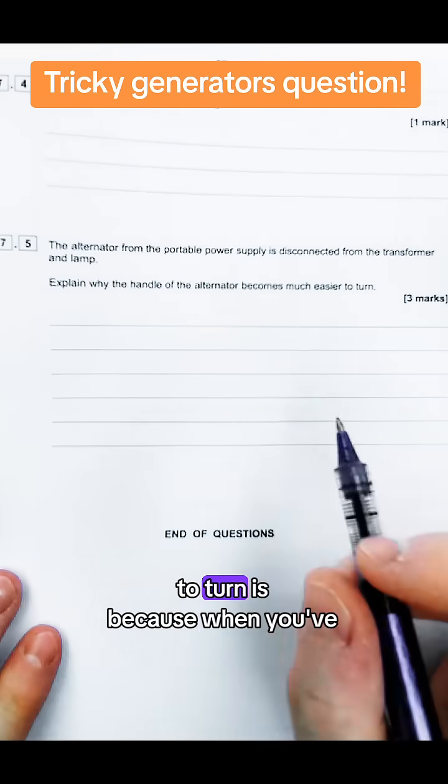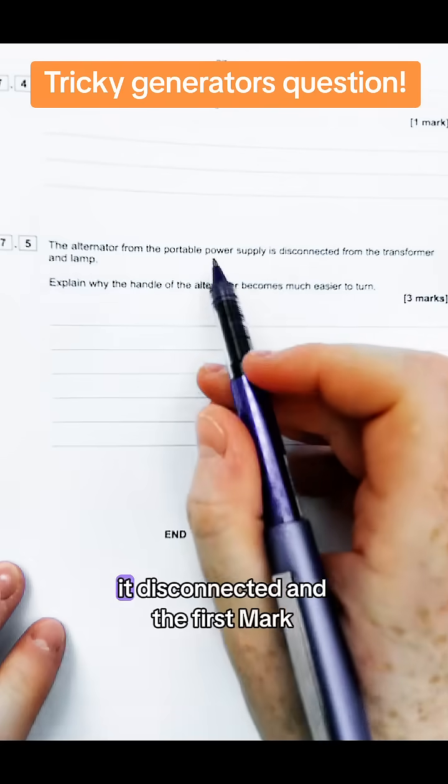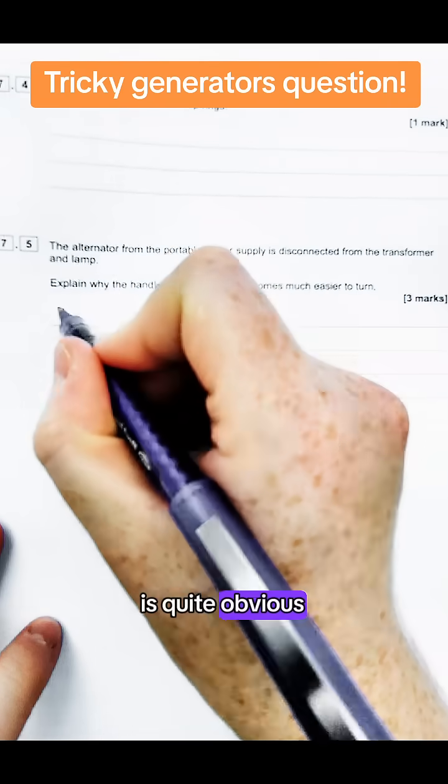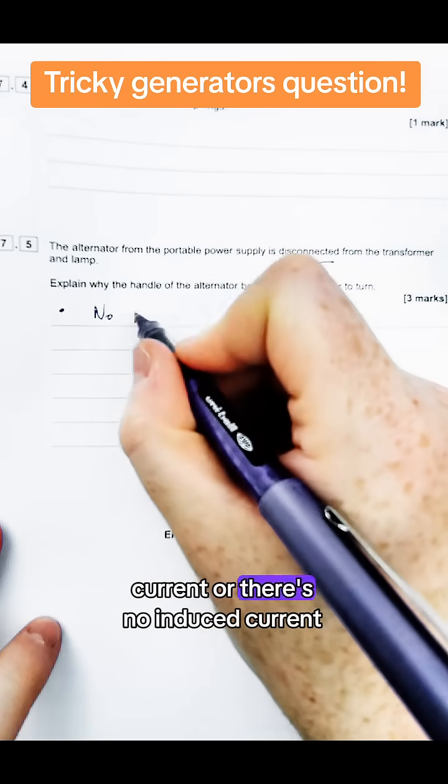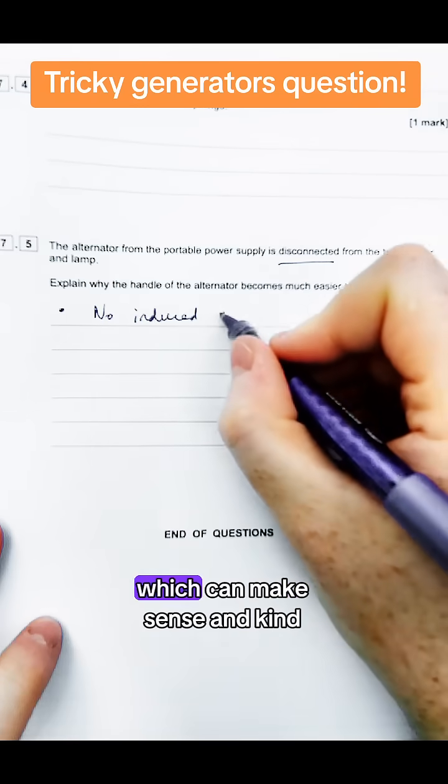So the reason it becomes easier to turn is because when you've got it disconnected the first mark is quite obvious. If it's disconnected that means there's no current or there's no induced current in the alternator which kind of makes sense and sounds obvious.